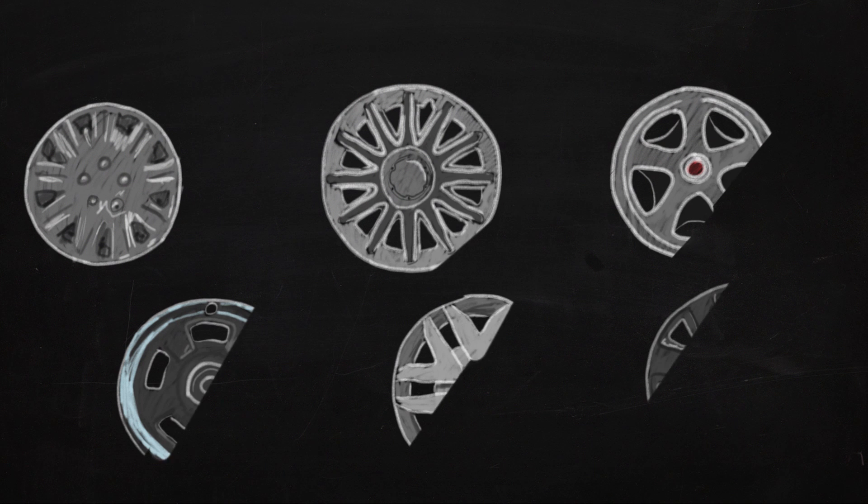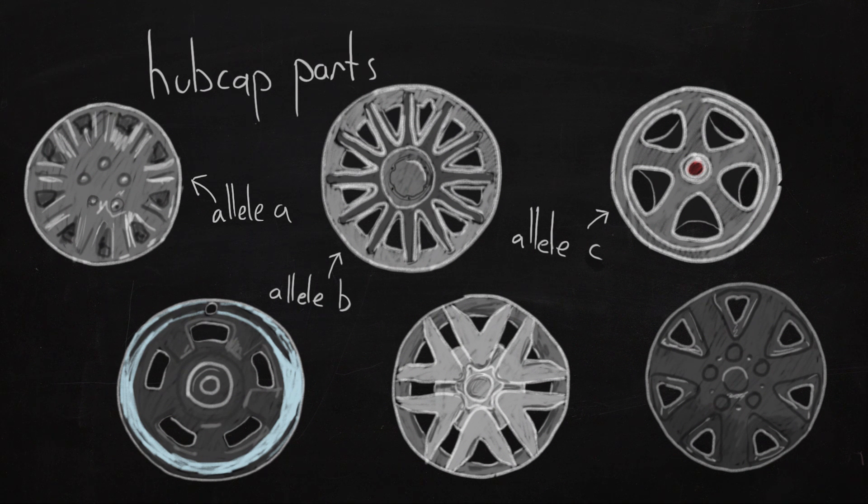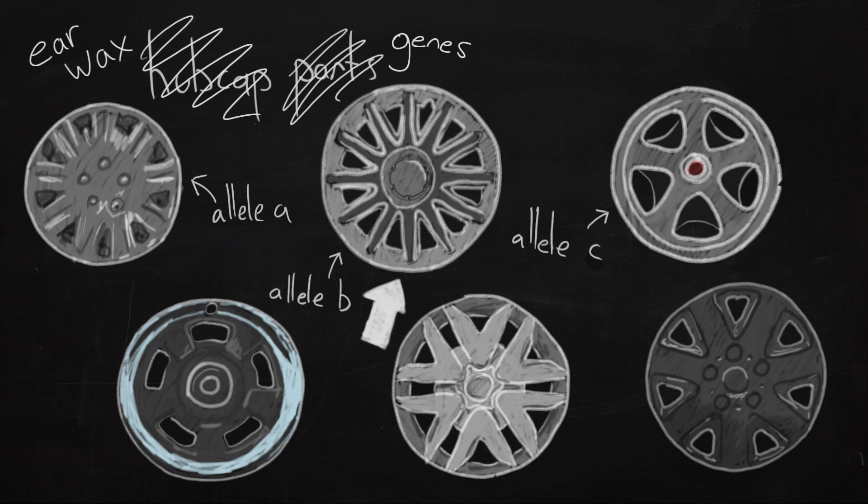But there are different versions of each car part. Each specific version is an allele. This hubcap is different than this hubcap, but these are all hubcap parts. These are all genes for the same thing, these are the genes for earwax consistency. And this allele leads to solid earwax.